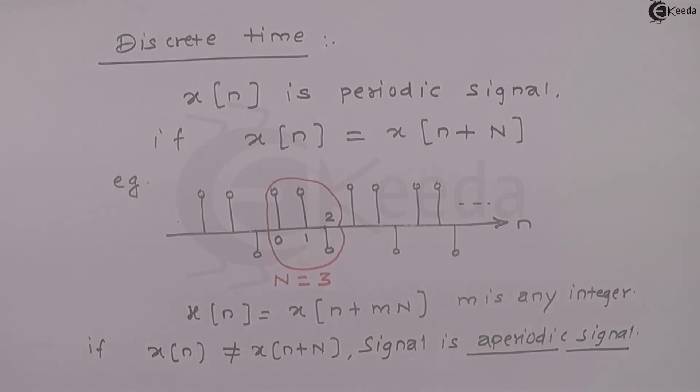So here we have seen very fundamental definition of periodic and aperiodic signal for continuous time as well as discrete time. Thank you.